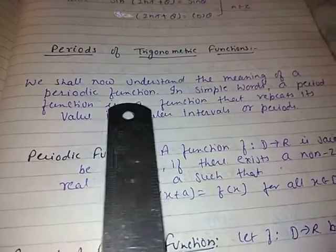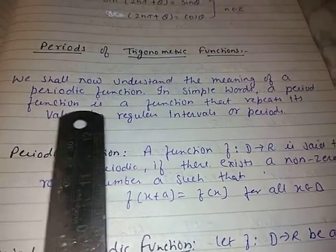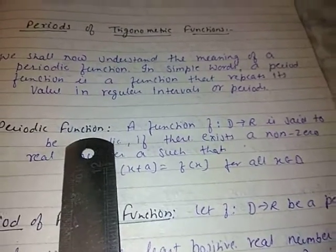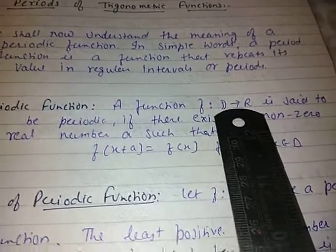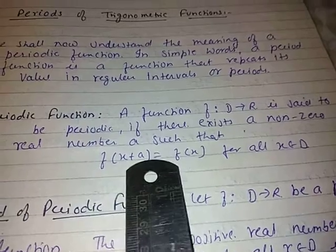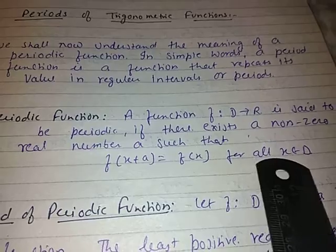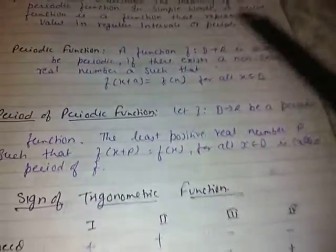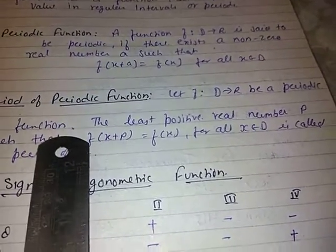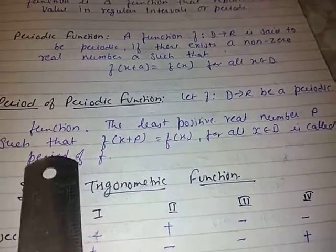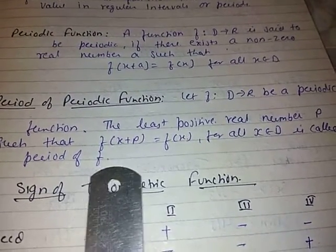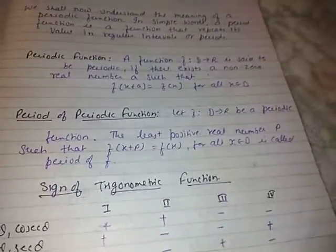We shall now understand the meaning of periodic function. A periodic function is a function that repeats its values in regular intervals or periods. A function f: D → R is said to be periodic if there exists a non-zero real number a such that f(x + a) = f(x) for all x ∈ D. The least positive real number p such that f(x + p) = f(x) for all x ∈ D is called the period of f. One complete revolution corresponds to one period.